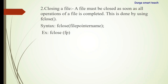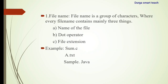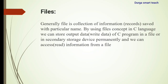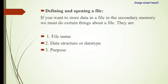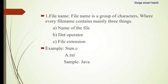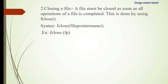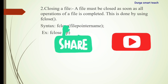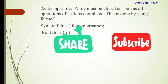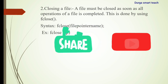The syntax for closing is: fclose(fp) — where fp is the file pointer name. In this way you can open and close a file. I hope the file concept is clear. If you want to open a file use fopen syntax, if you want to close a file use fclose syntax. If you have any doubts please comment in the comment section, and please share and subscribe to my channel. Thank you.